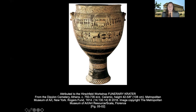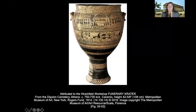On the funerary crater, we can see two registers. In the top register there's a funeral scene with the dead man laid out on a funerary bier and mourners tearing their hair out to the right and left. The checkerboard pattern above him is a funeral shroud. In the second register below, we see warriors with hourglass-shaped shields riding chariots in a strange overlapping pattern. All of the negative space is filled with geometric abstraction.